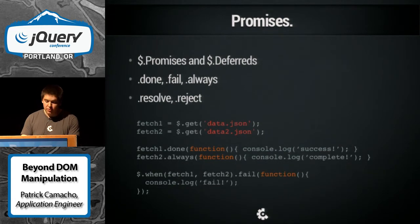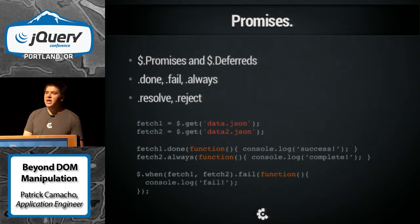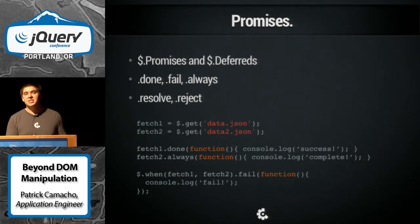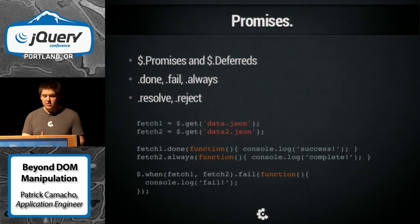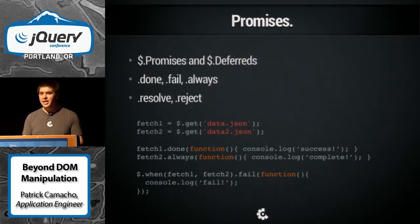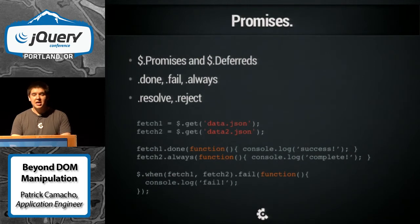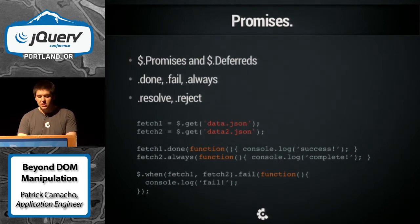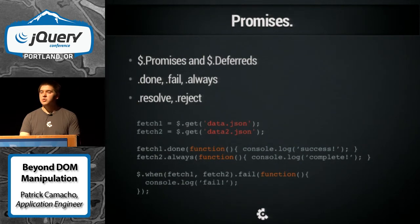We can also do one other really neat thing with promises: we can actually composite them together. jQuery provides a really neat way to do that with its 'when'. You can pass in multiple promises and then attach events to be executed. So if any of these fetches fail, we're going to console that out.